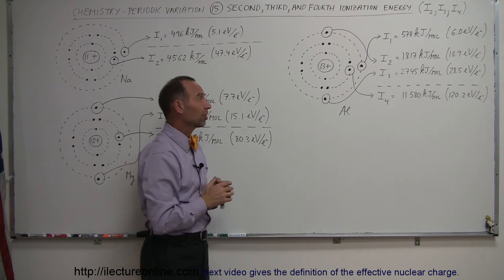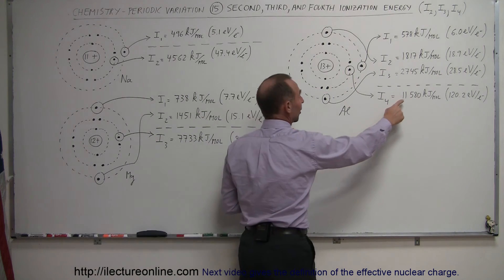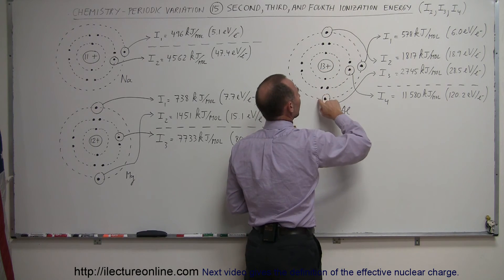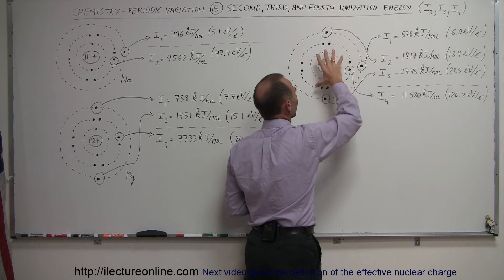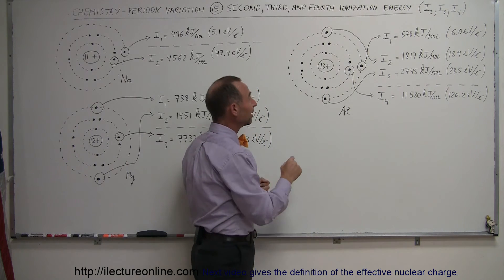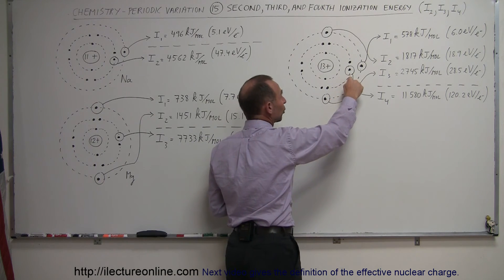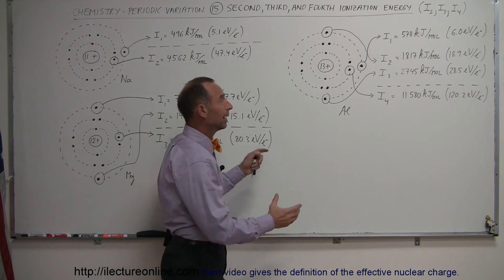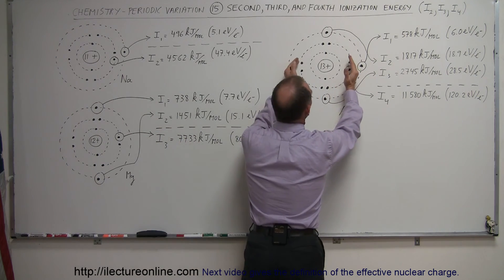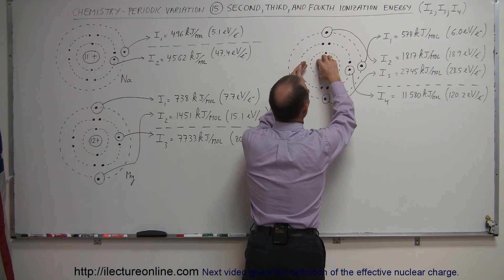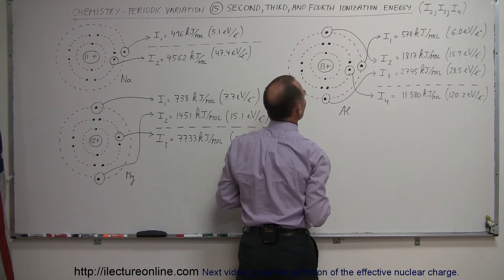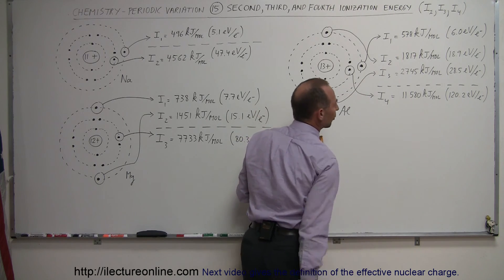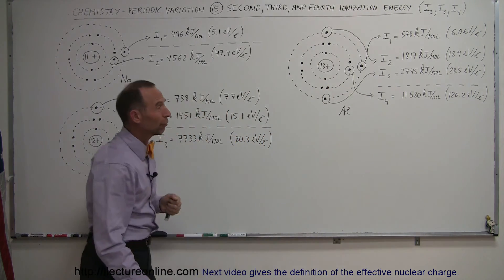Once those three electrons are gone, notice how much energy it takes to remove the fourth electron. With a strong positive charge at the center and only 10 electrons remaining, taking one from the 2p orbitals requires an enormous 11,580 kilojoules per mole, or 120 electron volts per electron. These orbitals are much closer to the nucleus due to the higher positive charge, so it takes a lot more force — and therefore a lot more energy — to pull them out.